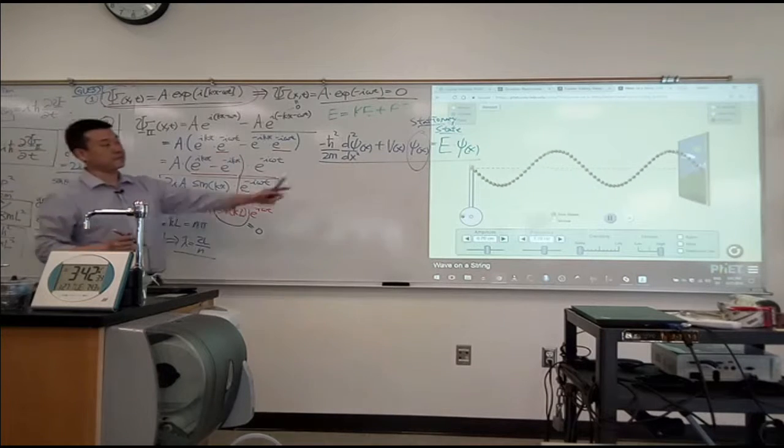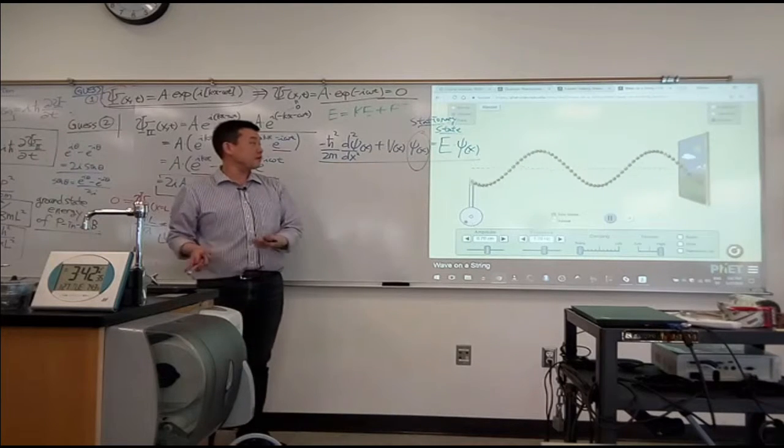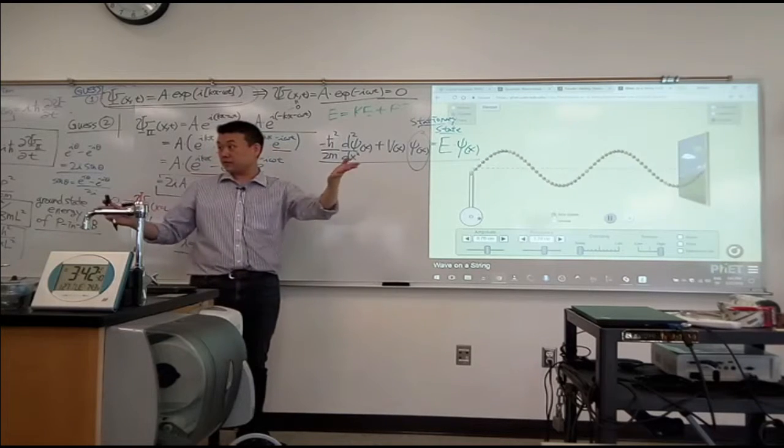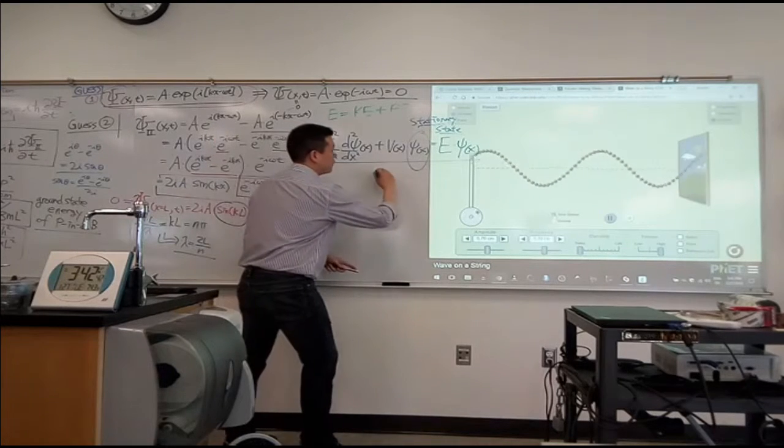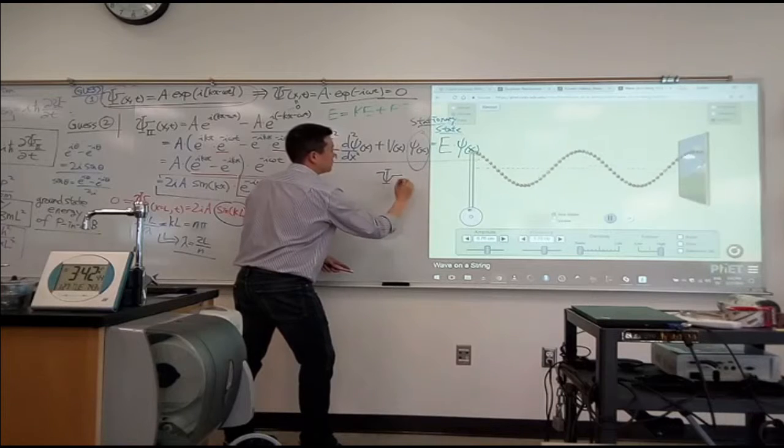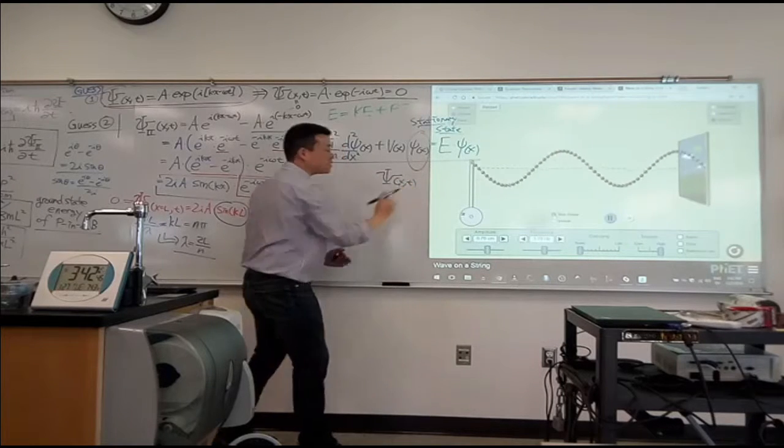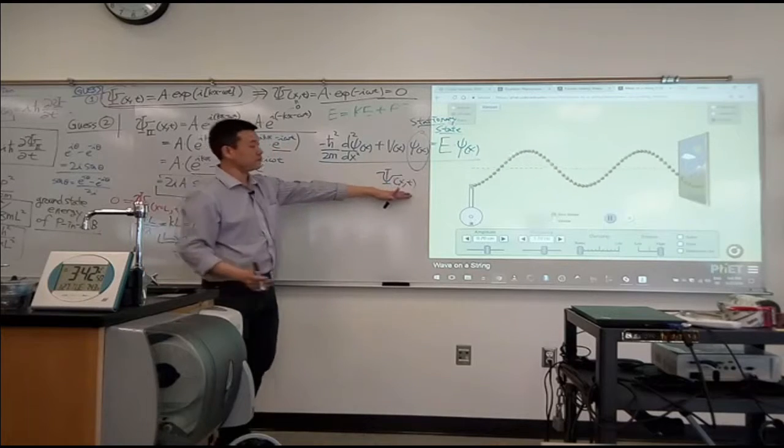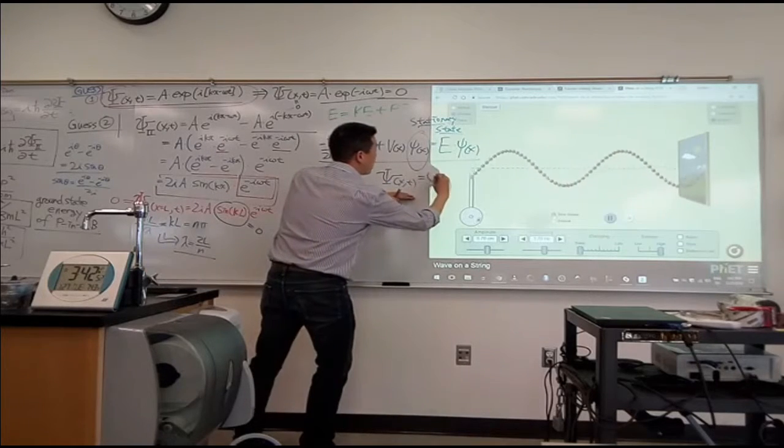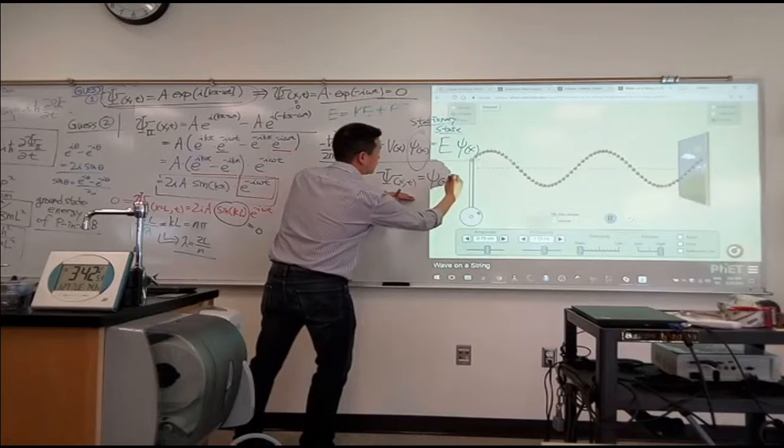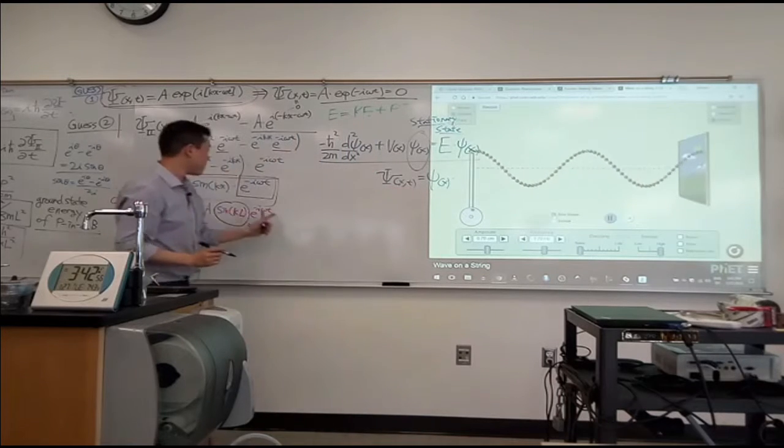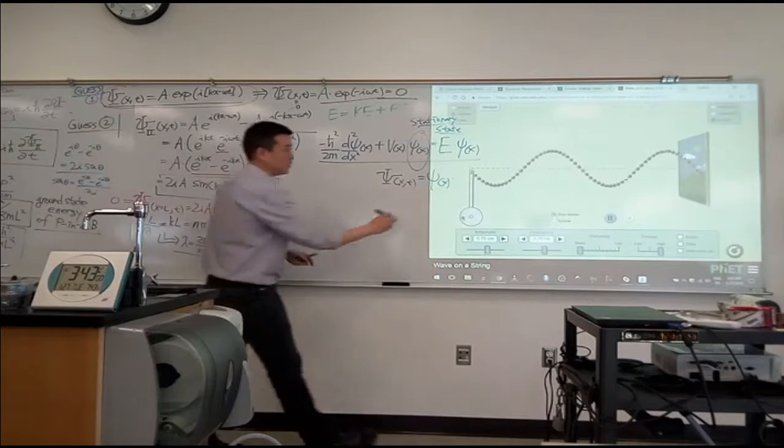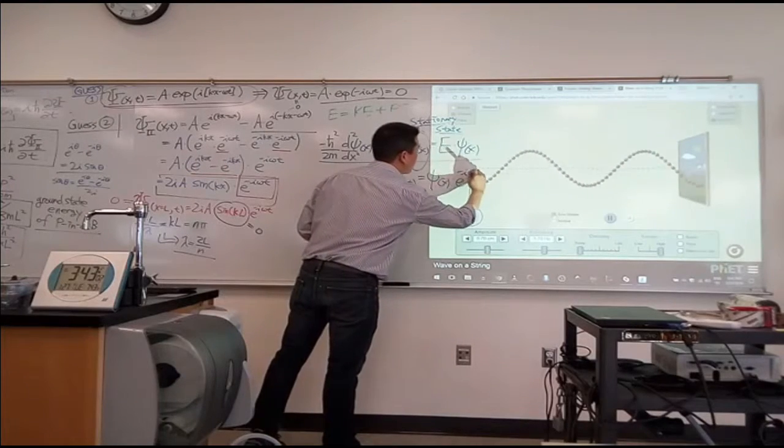So this is the so-called stationary state. It's actually a part of the, there's a full wave function, but you can always write down the full wave function this way. It's this full wave function. Once again, this is only for stationary states, no other state. For stationary states, you can say that this is whatever the position wave function times, and the time dependence is always in this predictable way, e to the minus i omega t.